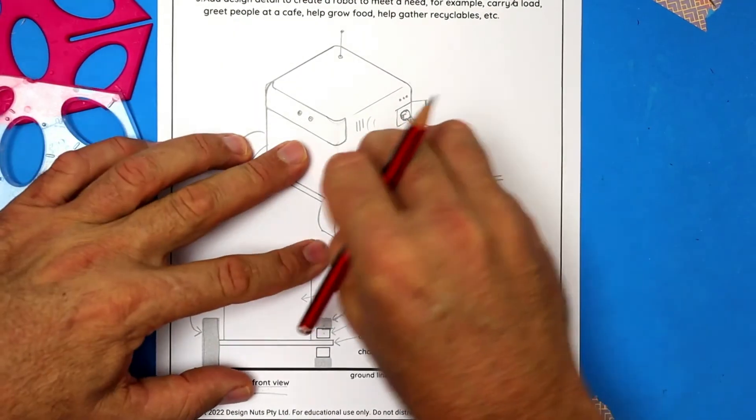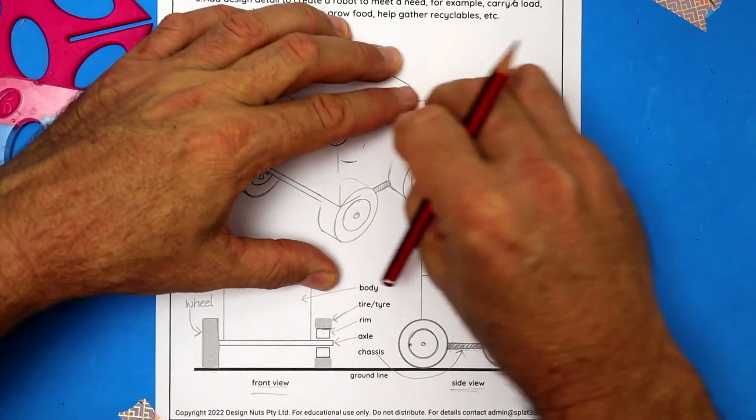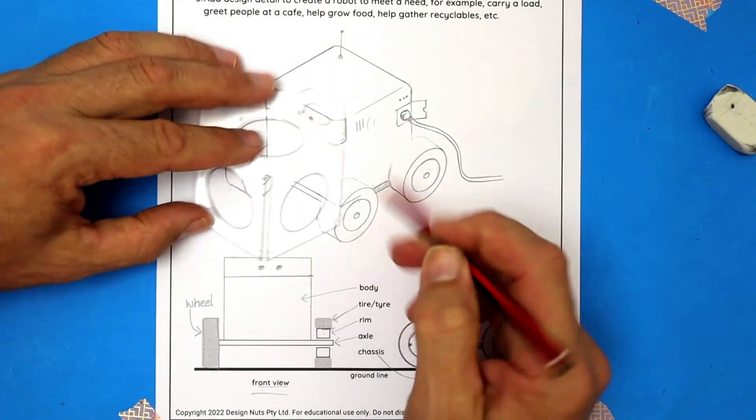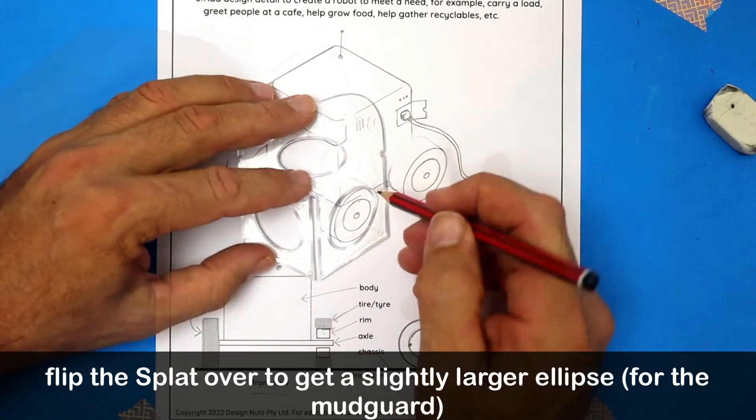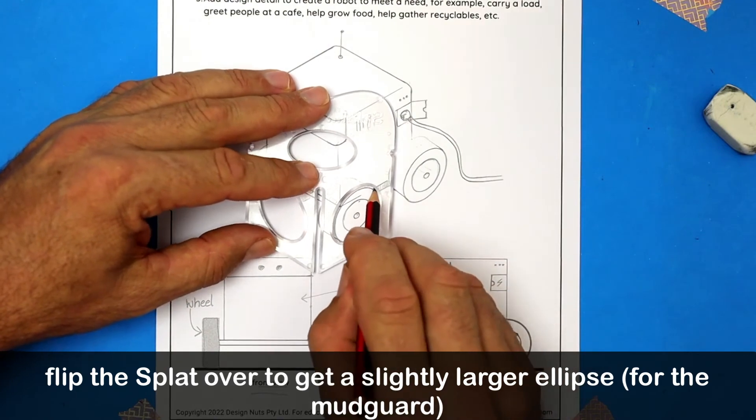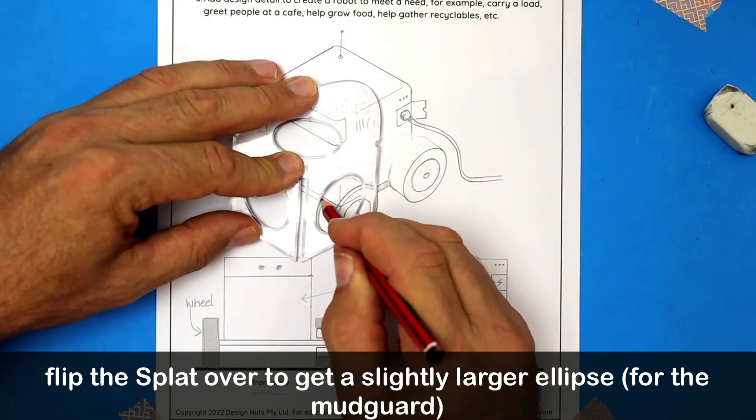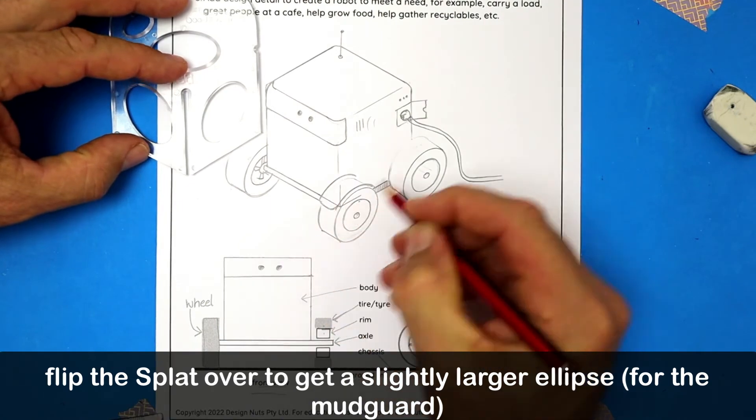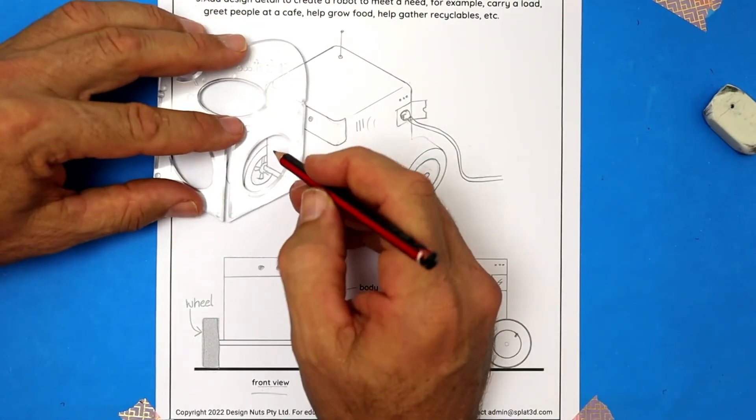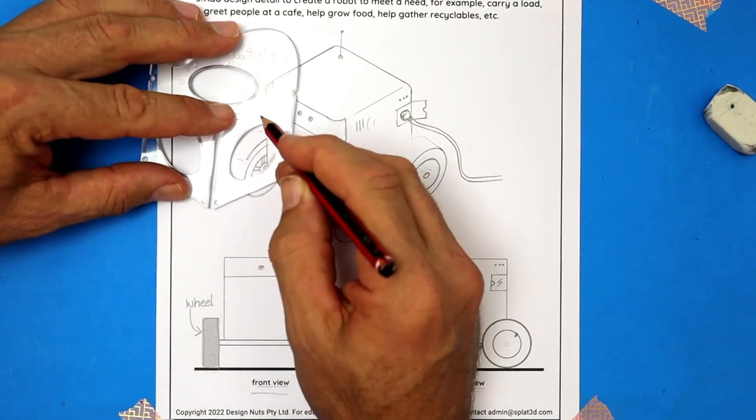Now let's try to imagine some changes. What about mudguards? If I need some larger ellipses, here's a trick. Spin it over to the back and by leaning your pencil over, you can get a slightly larger ellipse. That's how I'm drawing the mudguards on the top of each of the wheels.